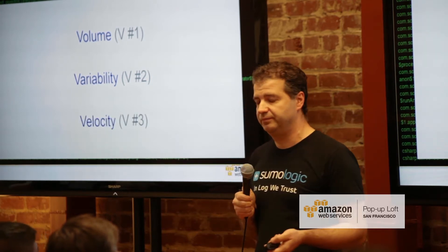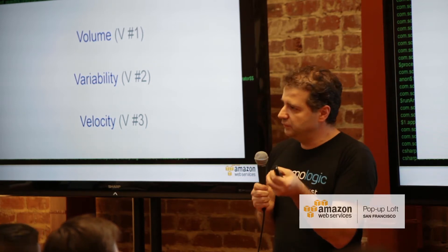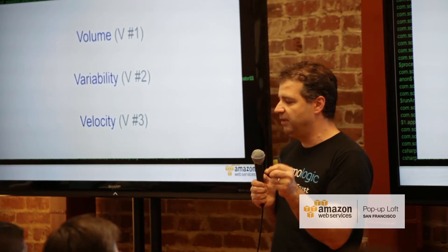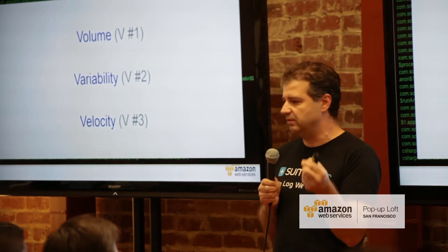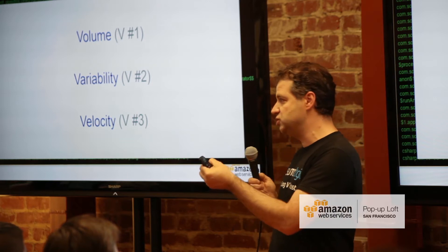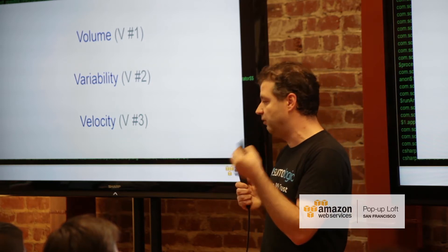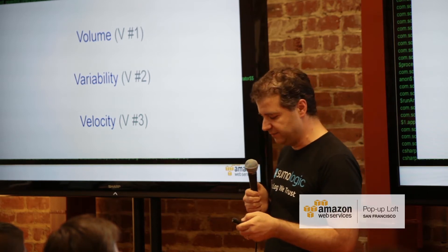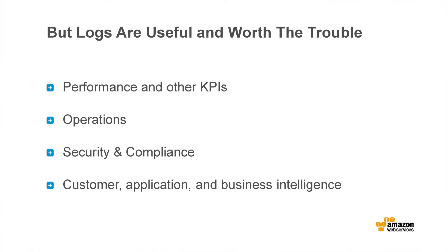The third reason is velocity. Log lines are most useful when you understand what they're telling you as soon as you can catch them, because it's an event of something occurring. It doesn't really matter if you catch something 30 days later — you want to know now. Something broke, you're having an issue, you need to understand it quickly and react. Handling it at that velocity is difficult. But don't get depressed — they're also very useful and worth the trouble. The rest of this talk is about use cases and the value you can get from good logging practices and analysis.